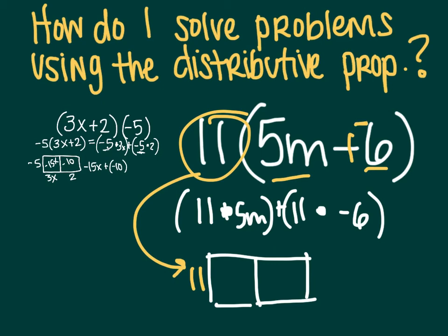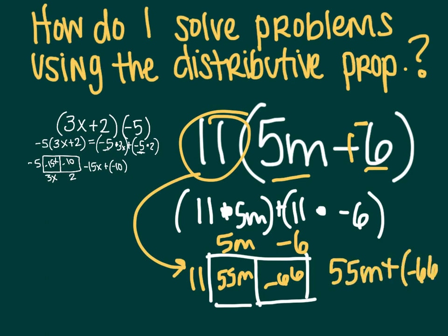So now I have five m on the outside and negative six on the outside. Inside the box, I find the area, 55 m and negative 66. I can't combine those any further. Plug in my adding sign, and there's my answer.